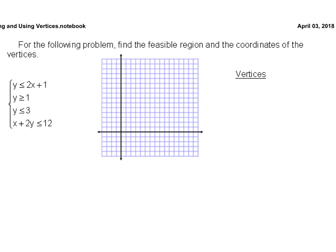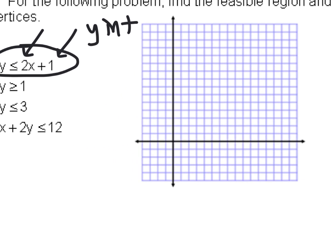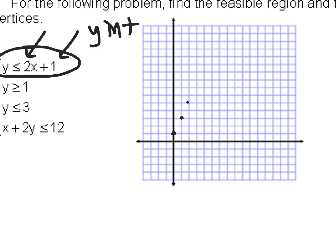I'm going to pause and graph those four equations. I'll start the first one: this is the slope, that's the y-intercept. Start at the y-intercept of 1 and do a slope of 2 — rise 2, run 1.